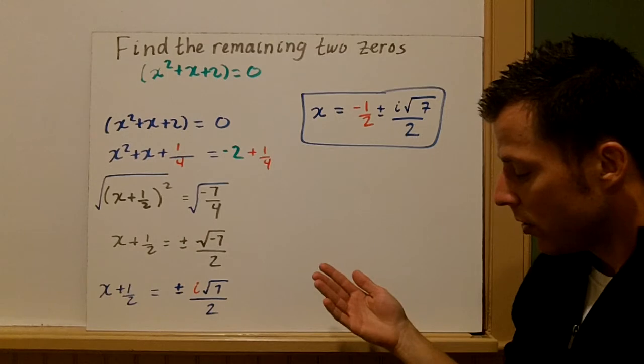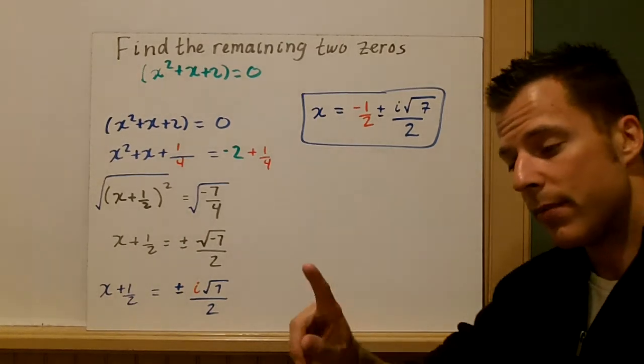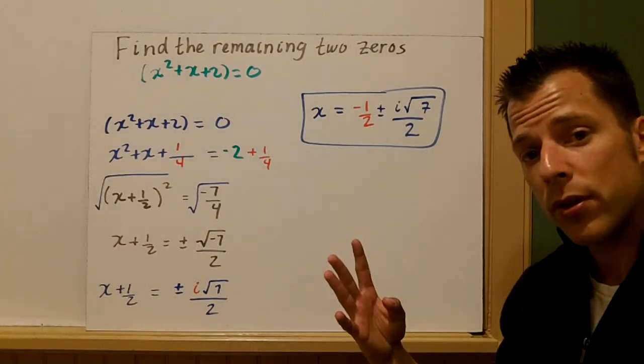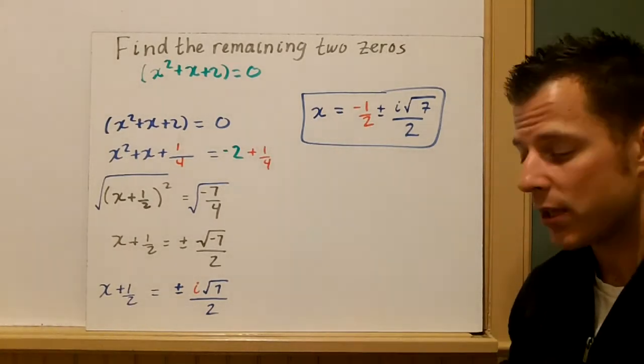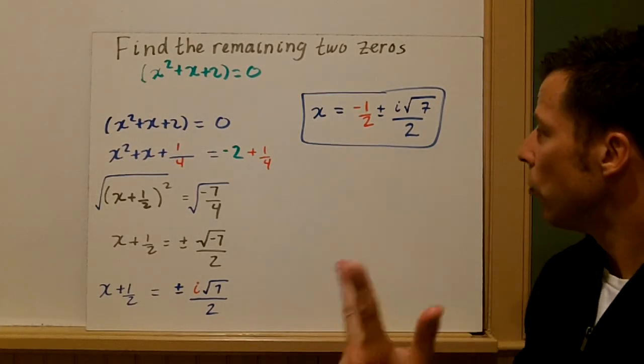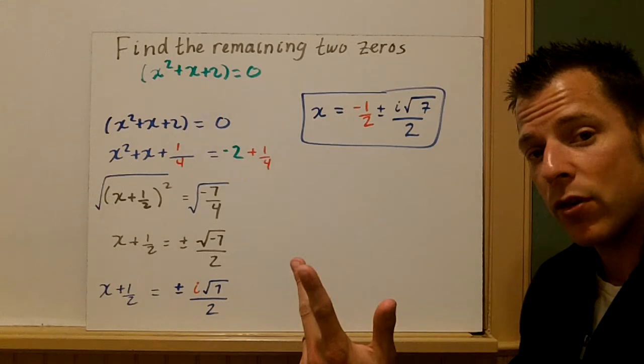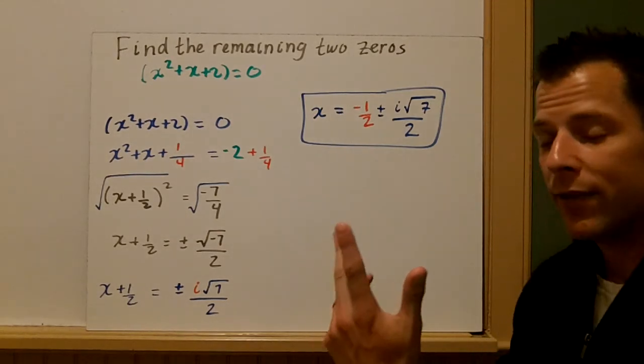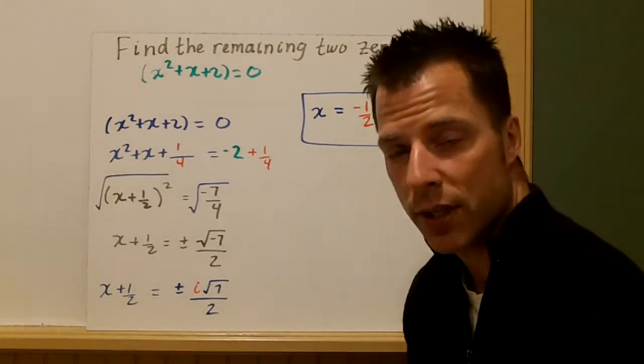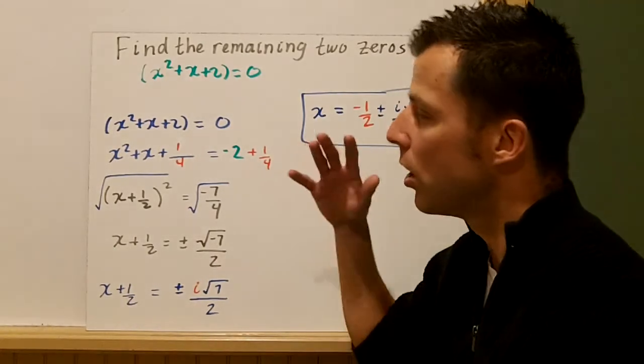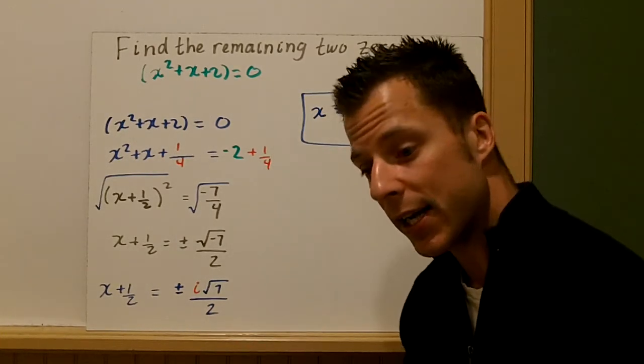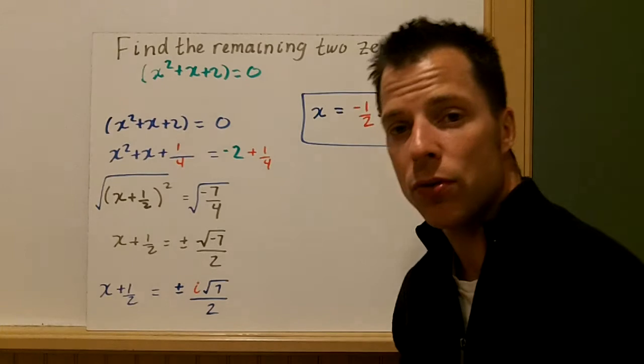So my zeros. We've already found two of them: -3 and 3. That's from the graph. So there's 2. Remember, this is a fourth degree. This is a quartic. So I need four zeros. I have -3, positive 3, -1/2 + i√7/2, and -1/2 - i√7/2. So those are my four zeros. I had a quartic equation and I had four zeros. Some of them are real. Some of them are not. I had two real and two imaginary.